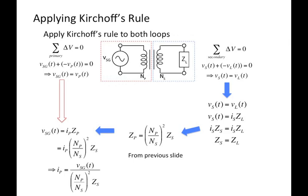We can solve for the current through the primary — it's just some function of what's on the secondary, the signal generator voltage, and the ratio of the coils. And the importance here is, once we have the primary current, we know how to find everything else: the current through the secondary, the voltage across the primary, and the voltage across the secondary.